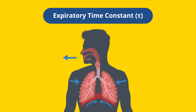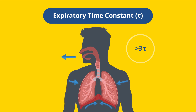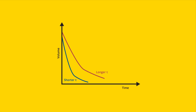To minimize the risk of AutoPEEP, clinicians must ensure that the patient's expiratory time is greater than three times the expiratory time constant. Thus, patients with a longer expiratory time constant require more time to expire, which can be illustrated with a graph depicting the decay in air volume in the lung over time.